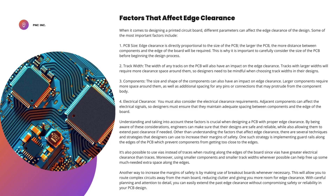When it comes to designing a printed circuit board, different parameters can affect the edge clearance of the design. Some of the most important factors include: one, PCB size — edge clearance is directly proportional to the size of the PCB. The larger the PCB, the more distance between components and the edge of the board will be required. Two, track width — tracks with larger widths will require more clearance space around them, so designers need to be mindful when choosing track widths in their designs.